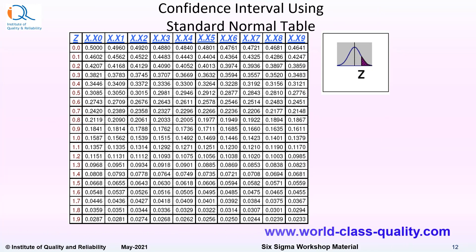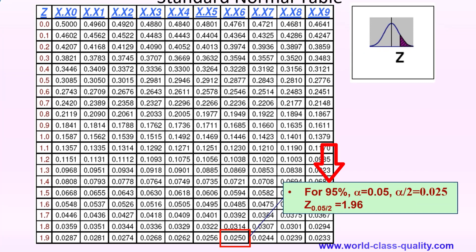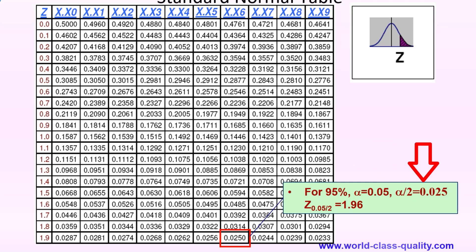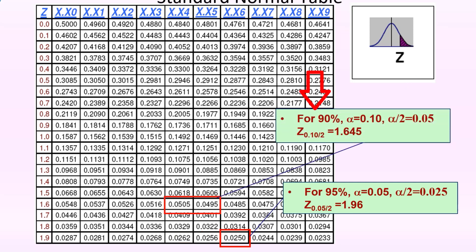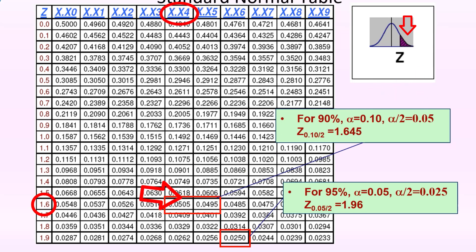This is a table of standard normal distribution. You can download it from our website www.world-class-quality.com. This shows the Z scores and areas to the right of a specific Z score. For 95% confidence level, alpha risk is 5%, therefore alpha by 2 is 0.025. So if we look at area beyond Z as 0.025, the Z score will be 1.96. And for 90% confidence level, alpha risk is 10% or 0.1, alpha by 2 is 0.05. Correspondingly, the Z score is 1.645, or we can round it off to 1.64.